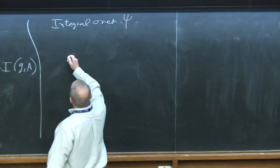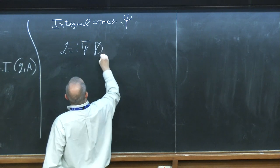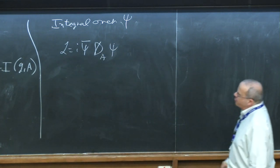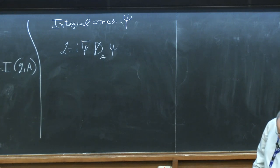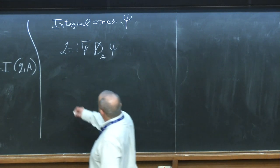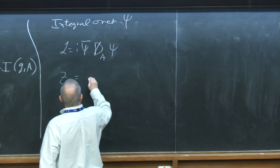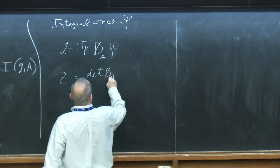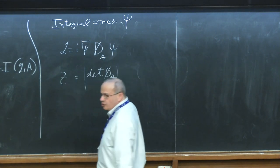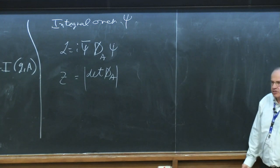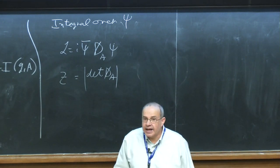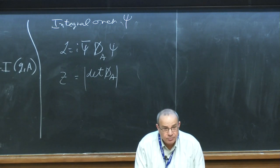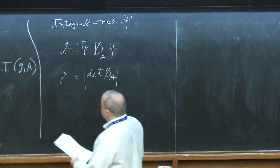We have the Lagrangian iψ̄ D̸_A ψ, where the Dirac operator depends on the metric and the background gauge field A. We would like to compute the functional integral over ψ. The absolute value of the partition function is |det D̸_A|, which is easy to define. But the interesting question is whether there is a phase. I'll state the answer about the phase, then present various ways of thinking about it — some right, some wrong.